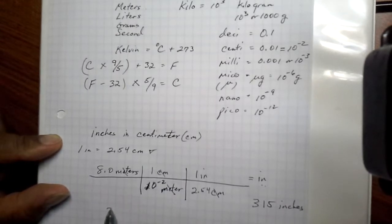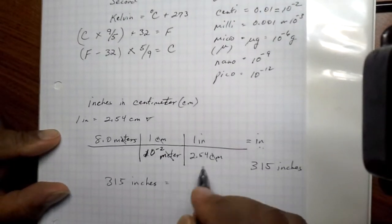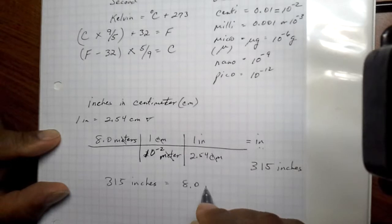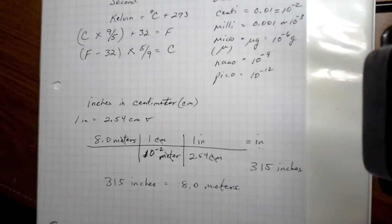And so 315 inches is equivalent to 8.0 meters. So we'll be doing similar conversions like this as we move on.